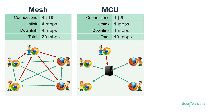Each participant will have a single connection with an uplink and downlink of one megabit per second in this specific example. The total connections would be five and the total network bandwidth would be 10 megabits per second.